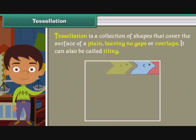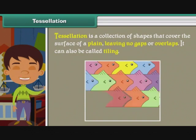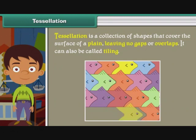Tessellation is a collection of shapes that cover the surface of a plane, leaving no gaps or overlaps. It can also be called tiling.